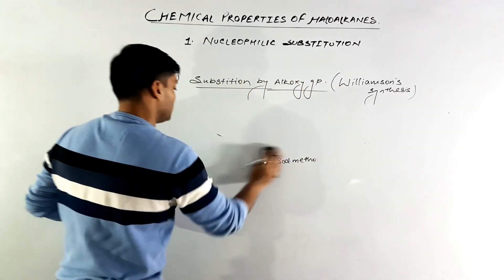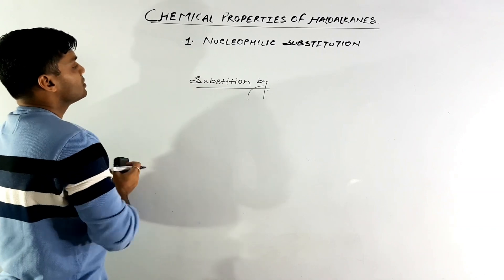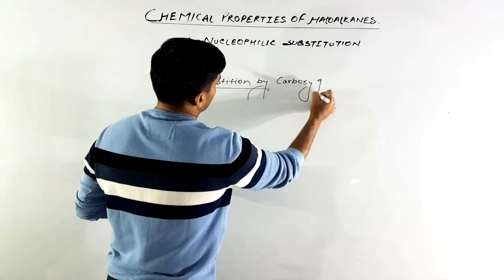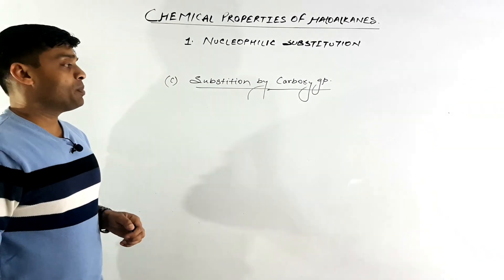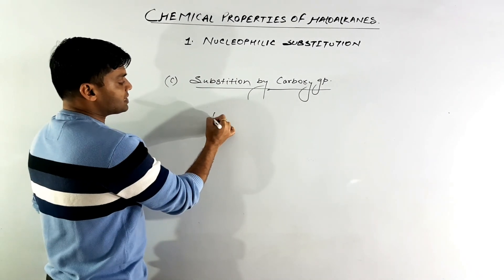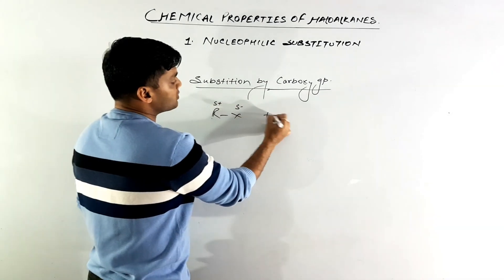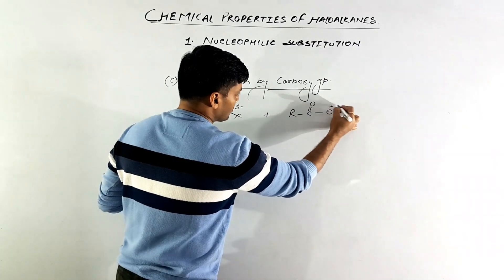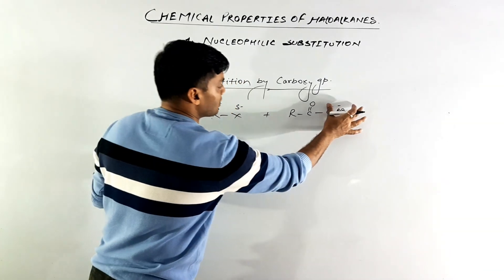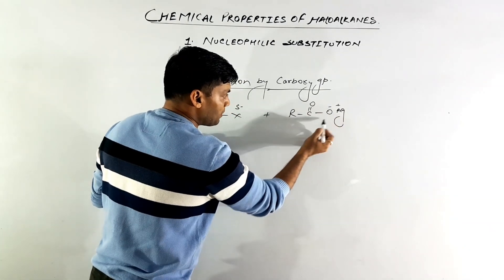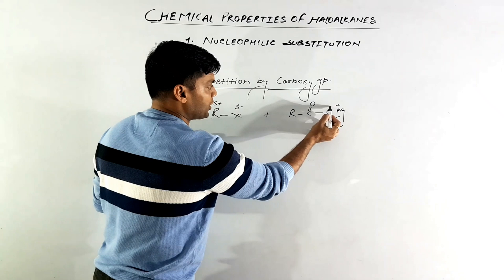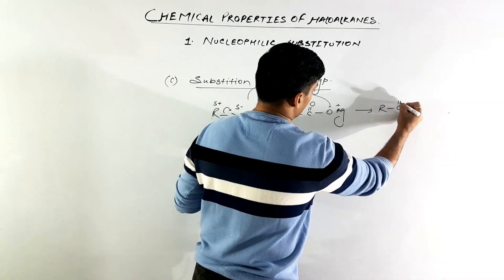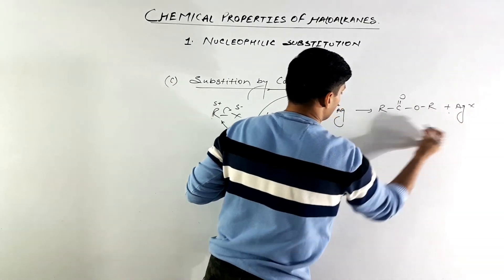The third substitution reaction is substitution by carboxyl group. Whenever alkyl halides are treated with a silver salt of an acid — for example, silver carboxylate (RCOOAg) — the carboxylate ion (RCOO⁻), being a stronger nucleophile, attacks the R group, substituting the halide ion. This results in the formation of RCOOR, which is an ester.